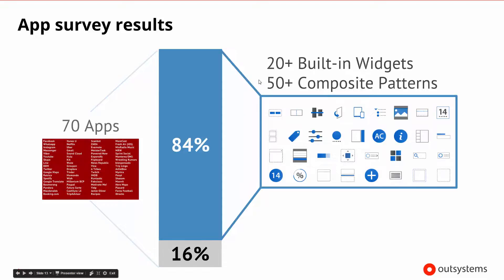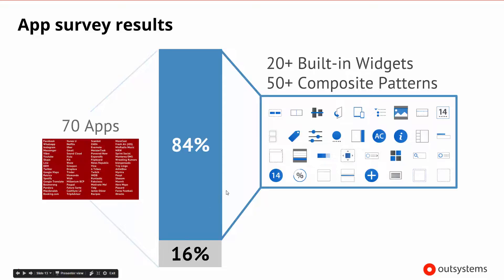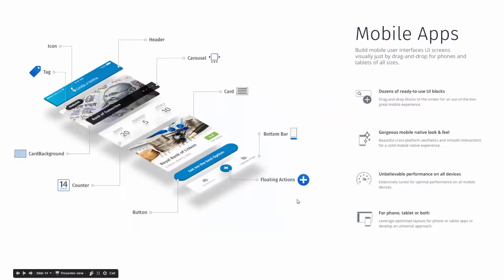Inside of OutSystems, we created a number of those as built-in widgets and what we also call composite patterns. The composite patterns are slightly larger components, and the 20 built-in widgets are more fundamental building blocks. With these 20-plus built-in widgets and 50-plus patterns, more than 80% of the websites and apps would have been built with these types of components — meaning developers can build a huge amount of expected functionality very quickly and easily.